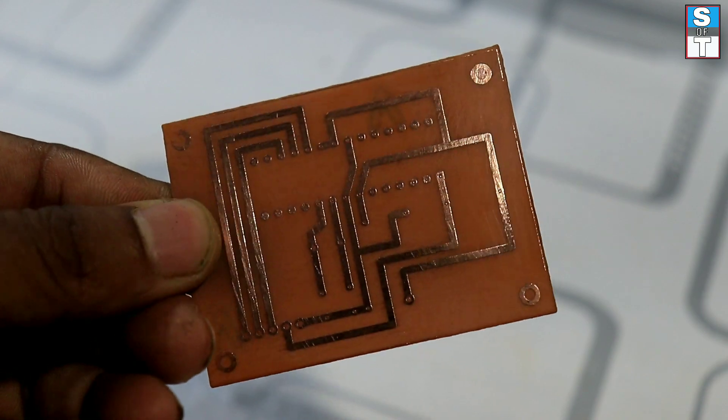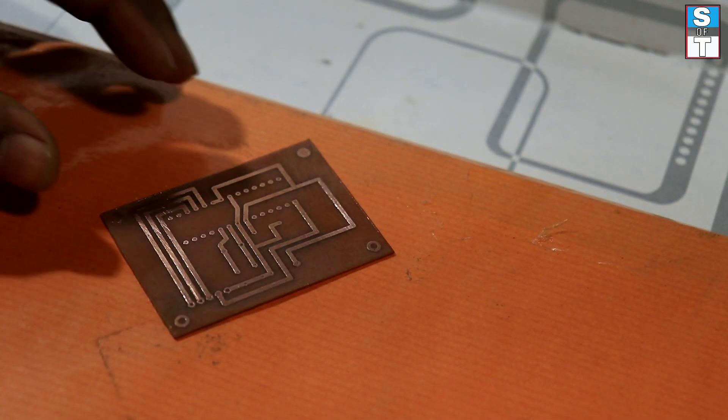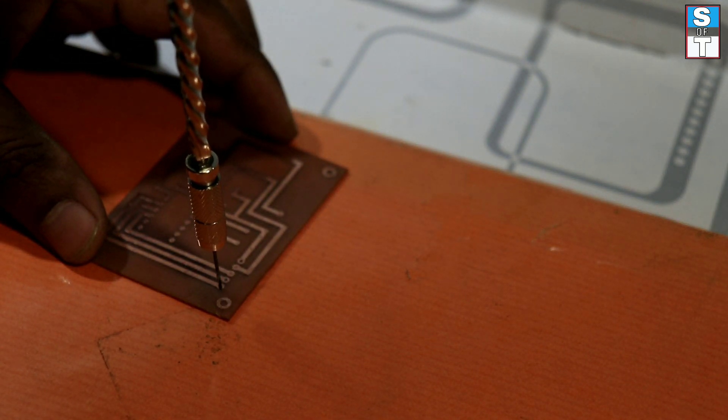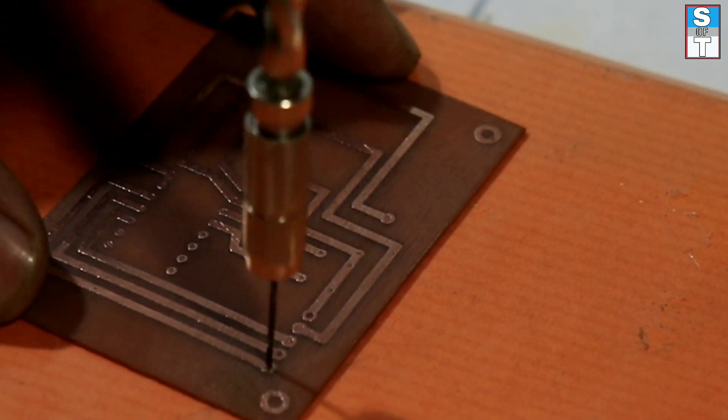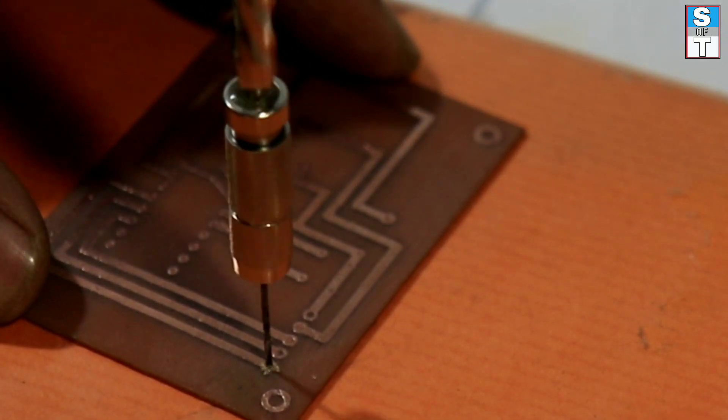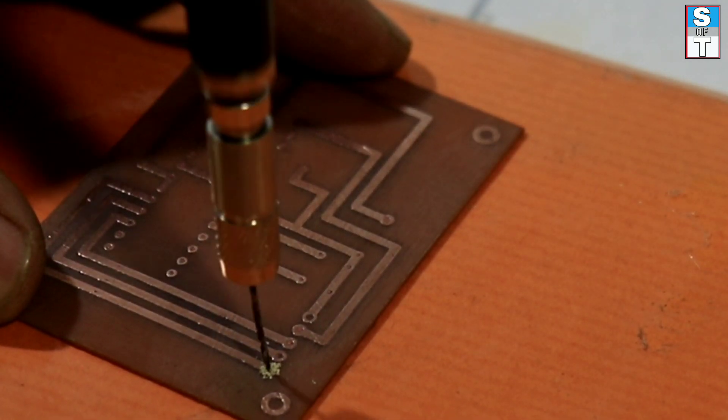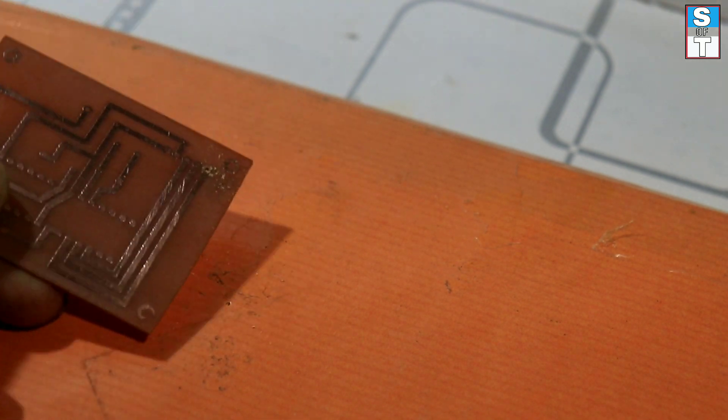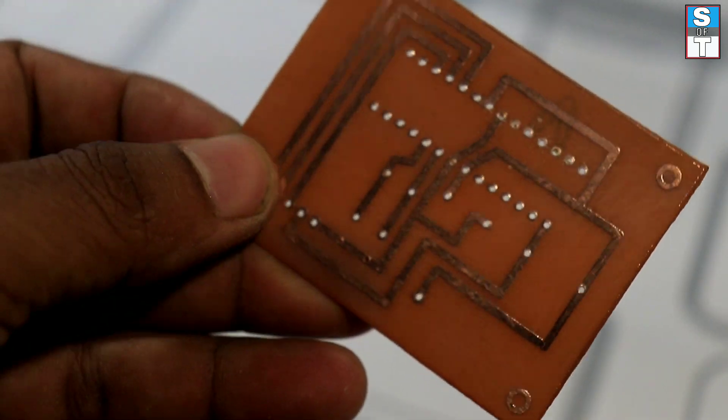Then we are going to drill the holes in the PCB. Here I am using a hand drill for the PCB. Now the PCB is ready.